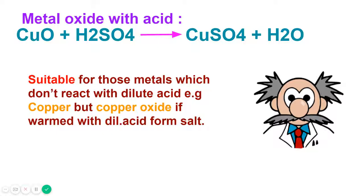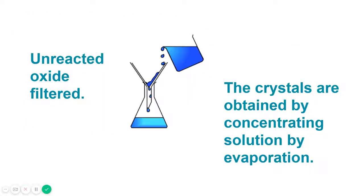As copper sulfate crystals contain water of crystallization, it is important not to evaporate the solution to dryness. So basically we use concentrated acid, we use excess amount of metal, and we heat the solution. Here you can see the unreacted oxide is filtered and the crystals are obtained by concentrating solution by evaporation.